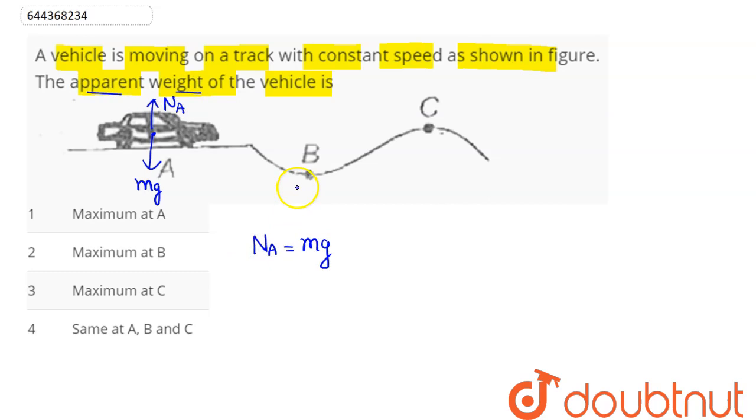Now coming to point B. Since it is moving with constant speed, at point B mg acts downward, normal reaction is along upward direction. To find centrifugal force, this is a complete curvature. Centrifugal force is away from the center along the radius line, mv²/R. Hence at B, N_B equals mg plus mv²/R, which is greater than the normal reaction at A. Hence apparent weight N_B is greater than N_A.